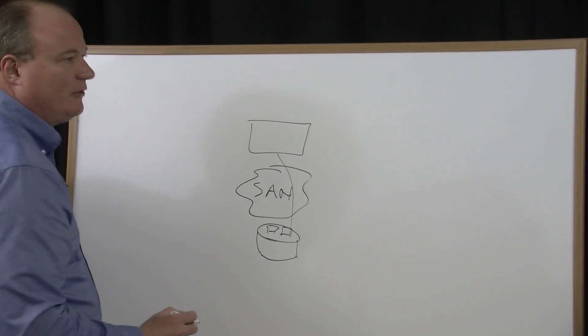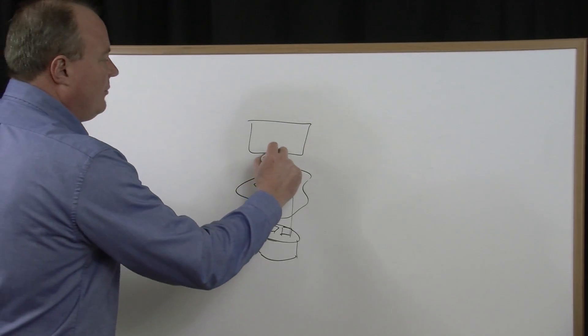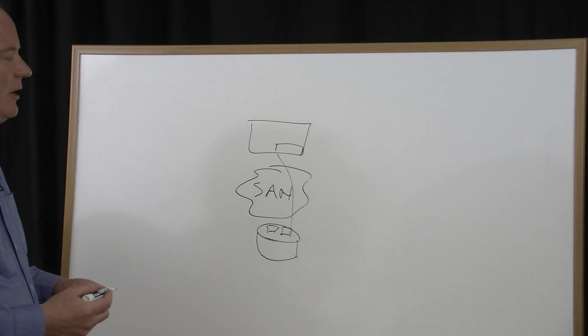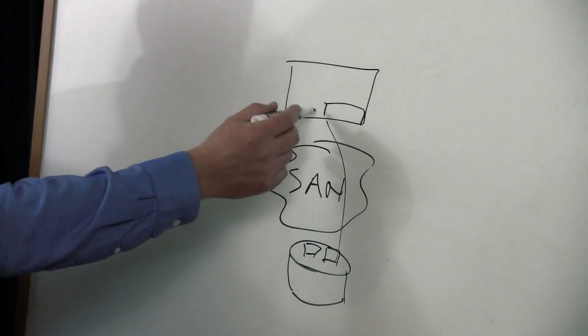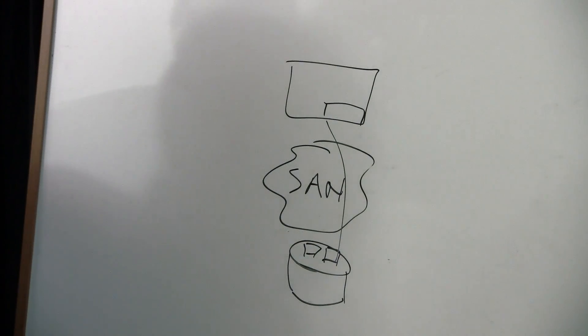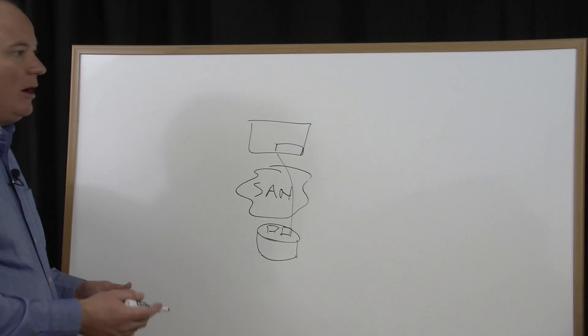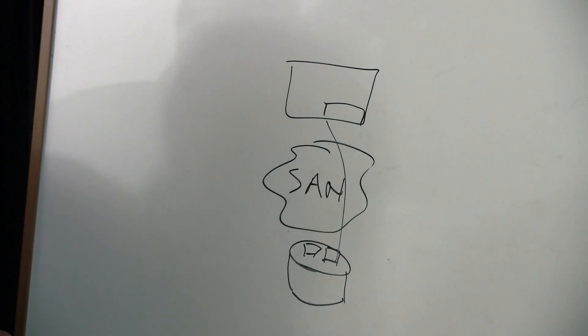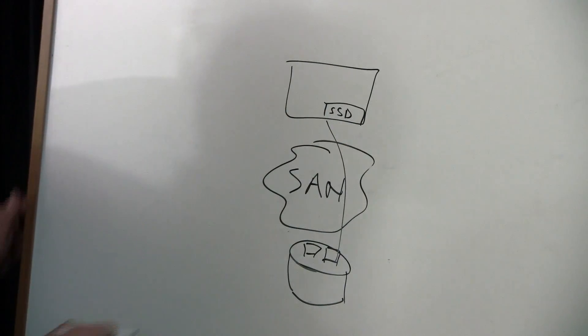The problem was that the I/O still had to traverse the SAN to get to the server. So to your question, how do we do caching by putting the solid state directly up in the server? That's really what server-side caching is all about. It's the same basic concept of creating a temporary store of hot data that the CPU is going to be accessing frequently.